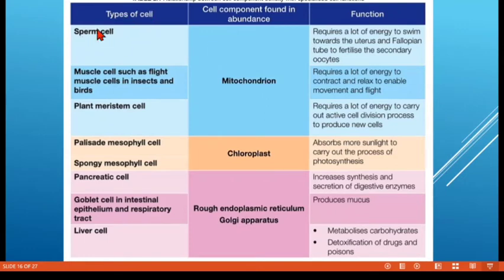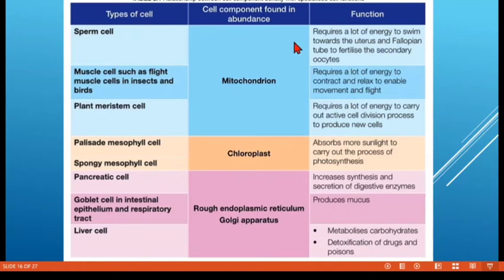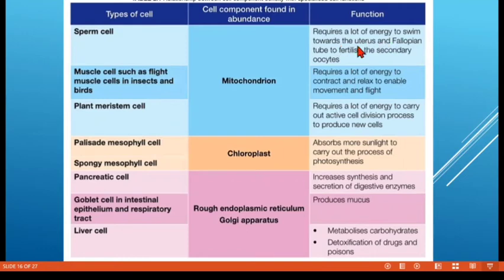For example, sperm cells contain an abundance of mitochondria because this is closely related to the sperm cell's function. The sperm needs to swim to the ovum for fertilization, so it requires a lot of energy. Since mitochondria are the site of energy production, that is why sperm cells contain many mitochondria.